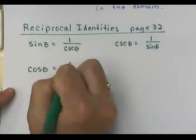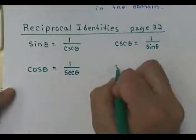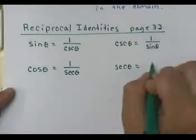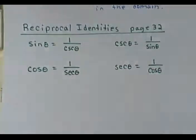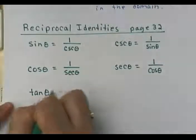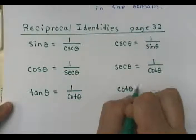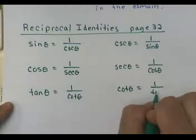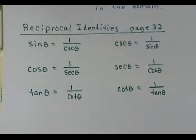Cosine is the reciprocal of secant, so cosine is 1 over secant, and secant theta is equal to 1 over cosine. Tangent theta is equal to 1 over cotangent theta, and cotangent theta is the same thing as 1 over tangent theta. Those are your reciprocal identities.